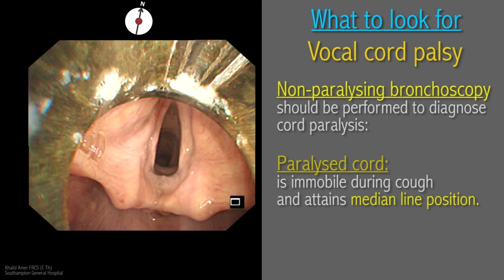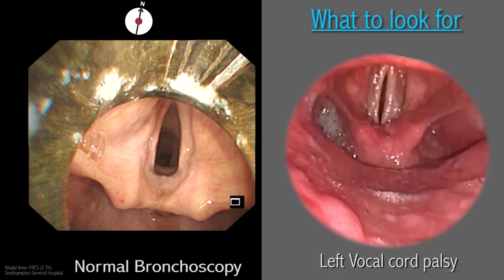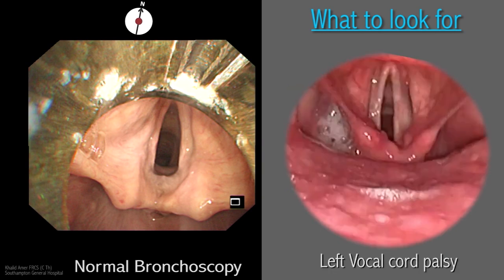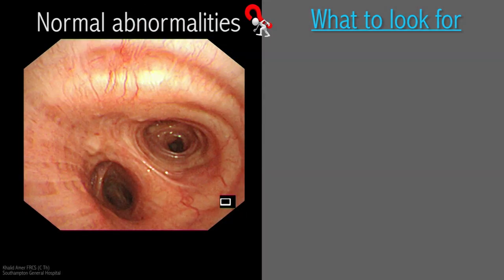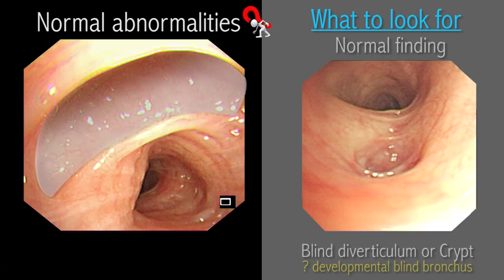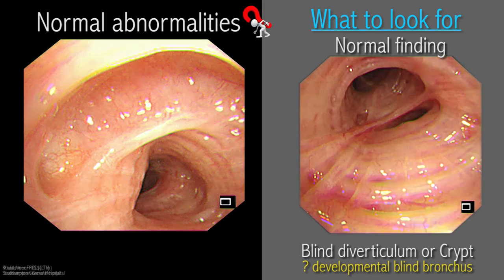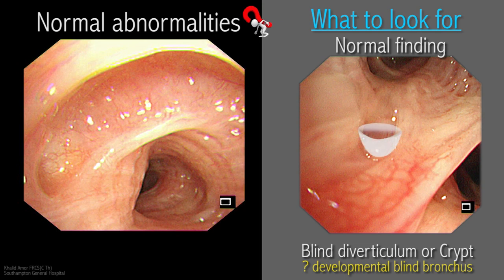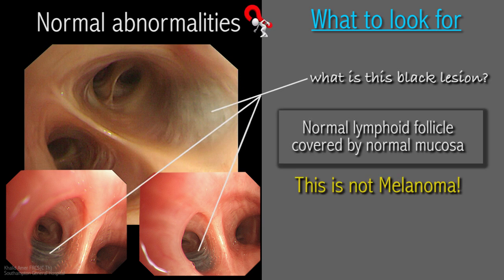To comment on whether a vocal cord is paralysed, a non-paralysing bronchoscopy should be performed — meaning a muscle relaxant should not be given at induction of general anaesthesia. Introduction of the scope will excite a cough reflex, and a paralysed cord is noted to be immobile in the adducted midline position. The normal looking bronchial mucosa is sometimes interrupted by small crypts and diverticula of varying shape and length, representing arrested development or blind ends of bronchi. This is a normal finding and should not be confused with fistula tracts. Also common is submucosal black discoloration representing normal lymphoid tissue, which can be confused with melanoma — the covering mucosa has a normal sheen differentiating it from a cancerous process.